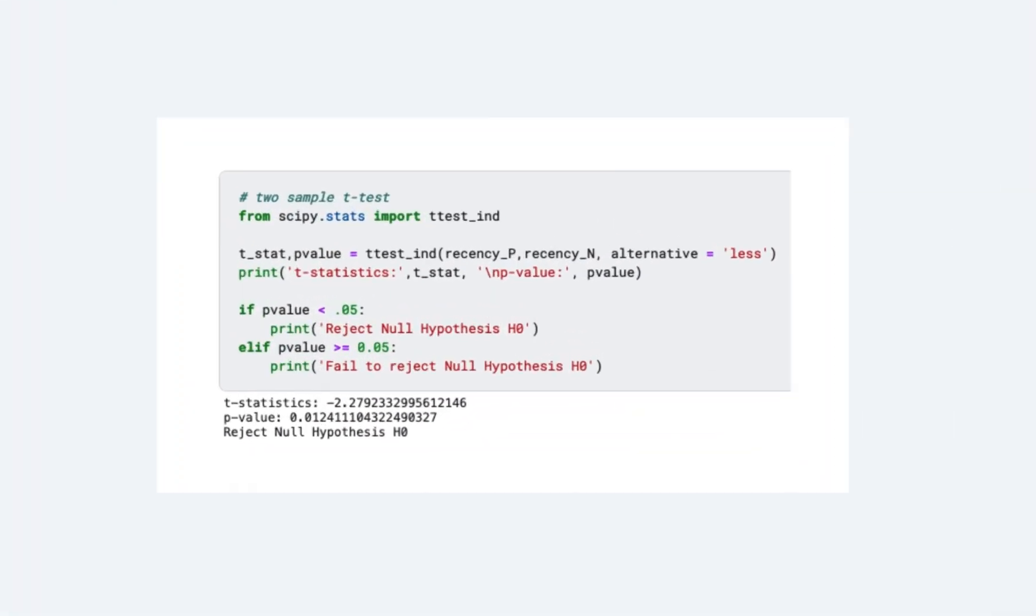T-test independent is a handy function for independent t-test in Python that has done all of these for us using few lines of code. Since p-value we got here is 0.012, which is smaller than the threshold 0.05, we can say that it is statistically significant. Based on the collected sample, a lower recency of customers who accepted the offer is likely not a curve by chance.